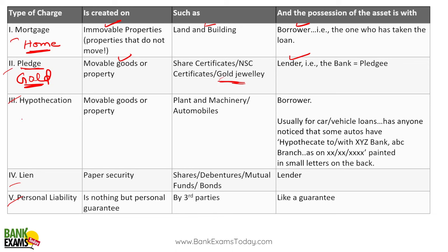Hypothecation — a good example is a car loan. It is a movable property and the borrower has the possession. You have the car; you took a loan against the car and you can drive it on a daily basis.